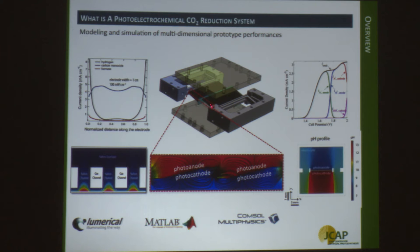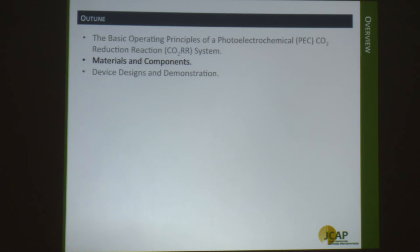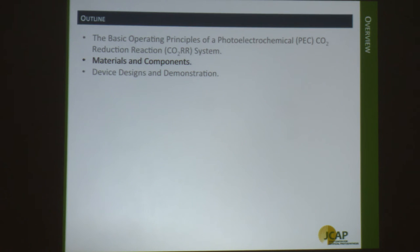For instance, you can have variation of fuel production rate along the electrode width, or a pH gradient in your system that will significantly change system efficiency. Hopefully this gives you a rough idea of how the whole system looks before we dive into the available materials and components and their challenges and opportunities.